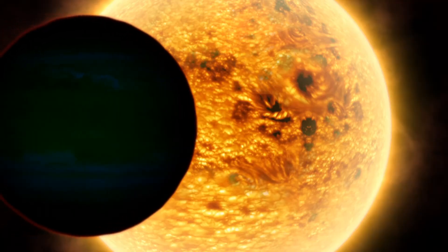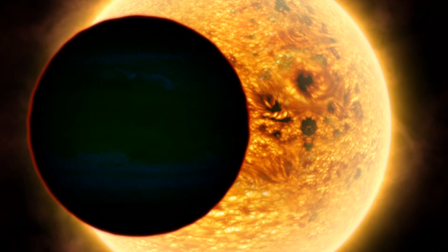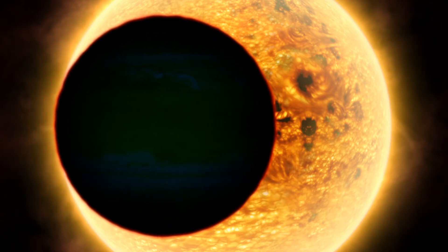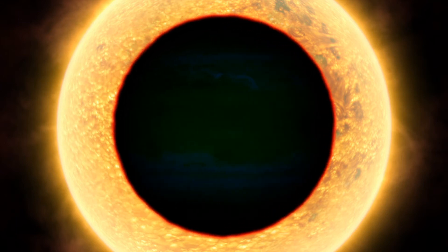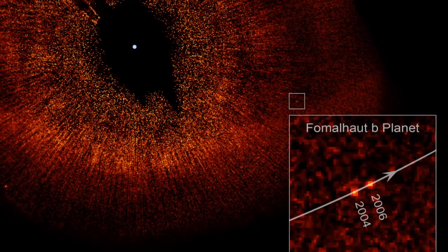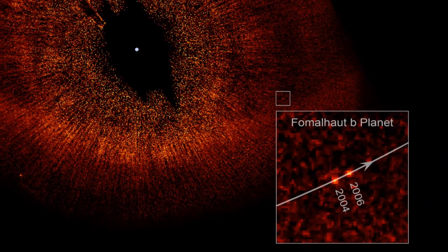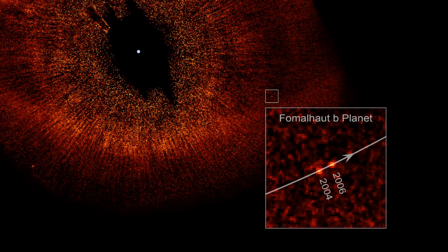Planets around other stars have been detected before, but usually indirectly by looking for clues, like the wobbling motion of a star as a planet orbits it, or a star getting dimmer as a planet passes in front of it. This time Hubble has given us a rare direct image of an extrasolar planet, and what's more, the first in visible light, the type our eyes naturally see.